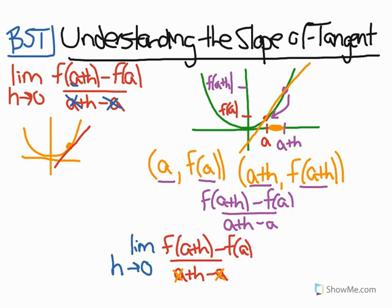And as soon as h becomes 0, if it became 0, you would have the same point. It would be on the same place because there would be nothing being added to a. So this is why I'm using a limit as h approaches 0.